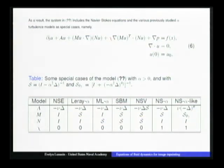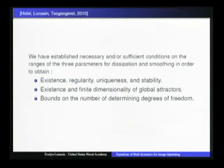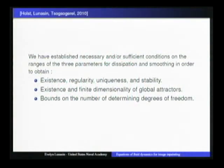Here is a summary of the alpha models we have so far: the usual Navier-Stokes, Leray-alpha, modified Leray-alpha (ML-alpha), Simplified Bardina model, Navier-Stokes-Voigt, Navier-Stokes-alpha, and the Navier-Stokes-alpha-like equations introduced by Olson and Titi. We have generalized the result of Olson and Titi and found necessary and sufficient conditions on the three parameters for dissipation and smoothing in order to obtain global well-posedness results.